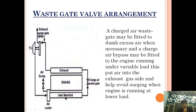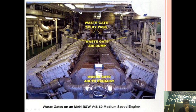So this is how the waste gate valve arrangement is provided. It is provided with three components: the exhaust wastegate, the air dump, and the charge air wastegate. The charge air wastegate is used in variable load conditions to avoid surging. As shown in the picture, the scavenge manifold is connected to the exhaust manifold, extra air produced in the manifold is dumped by the air dump valve, and the turbocharger bypass allows extra exhaust to be directed to the economizer when the engine operates at 100% load.